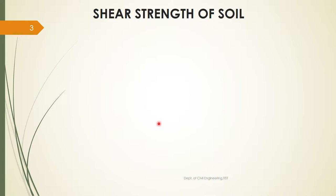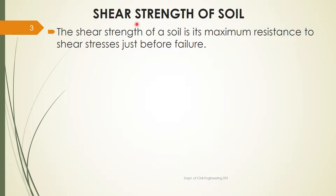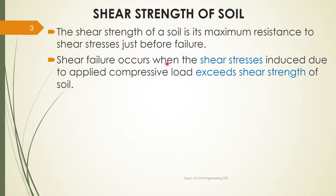We'll first start with the shear strength of soil. When a load is applied on a body or soil, stresses will be developed. When we apply a compressive load on the soil, due to this compressive load, shear stresses will be developed in the soil. The maximum value of shear stress that a soil can take is known as the shear strength of soil. Shear strength is the maximum resistance to shear stress just before failure, and shear failure occurs when the shear stress induced exceeds the shear strength.